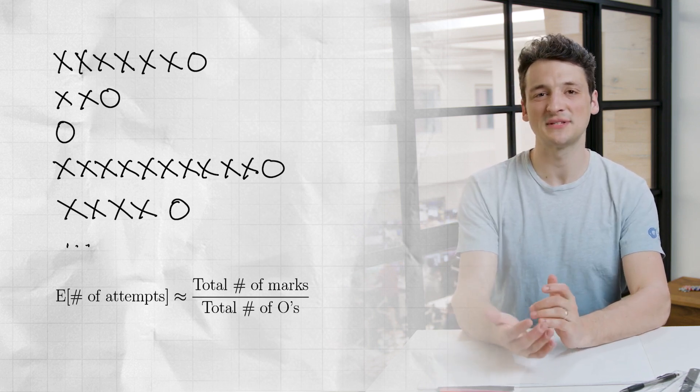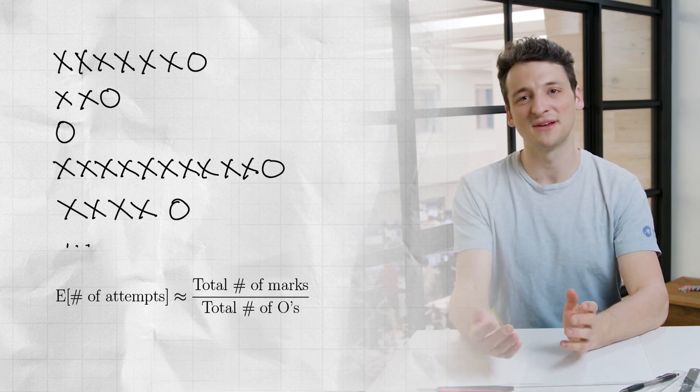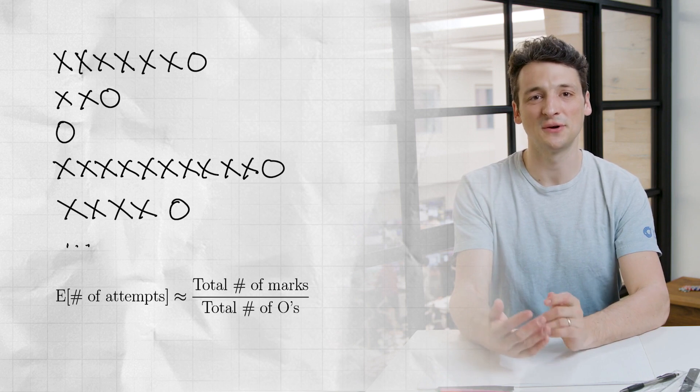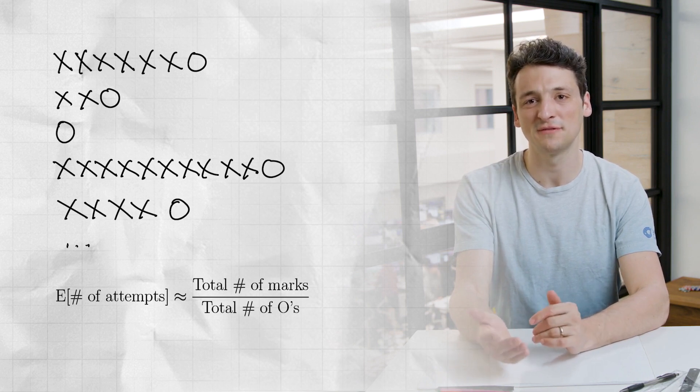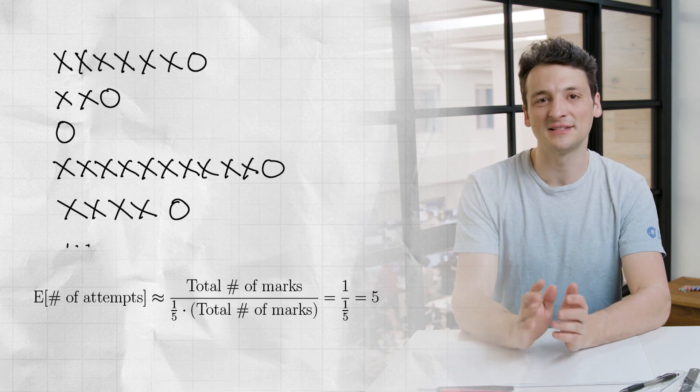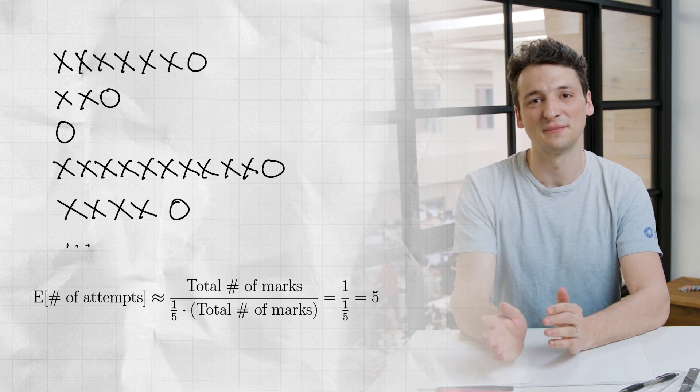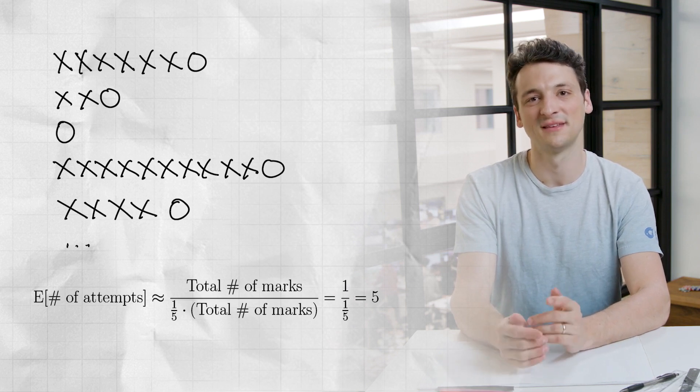Therefore, the expected number of attempts equals the total number of marks over the total number of o's. Since Danielle is 20% to make each half-court shot, as the simulated sample gets larger and larger, it must be true that the total number of o's approaches one-fifth times the total number of marks. So finally, the expected number of attempts is the total number of marks over one-fifth times the total number of marks, or one over one-fifth, or five. Okay, that's a lot of fives. I'm starting to think it might be the right answer to the problem of the week.